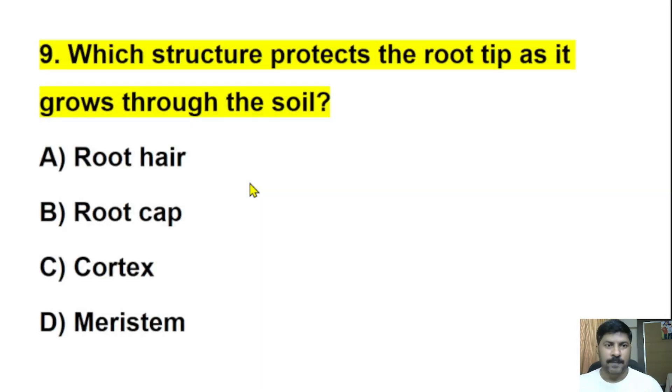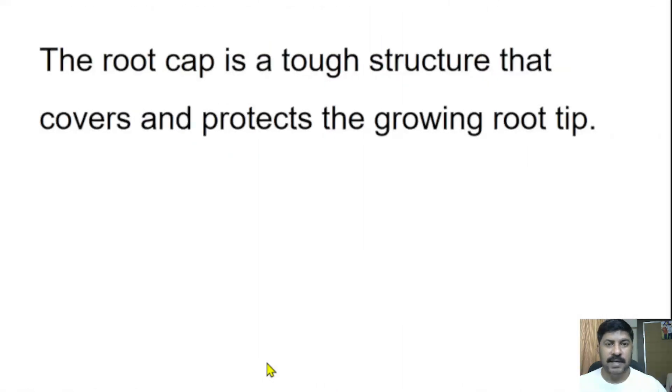Ninth question: Which structure protects the root tip as it grows through the soil? Root hair, root cap, cortex, or meristem? The correct answer is root cap. The root cap is a tough structure that covers and protects the growing root tip.